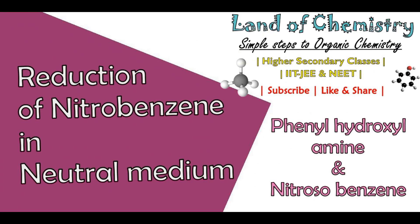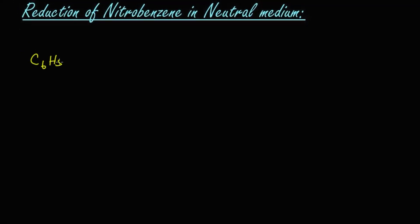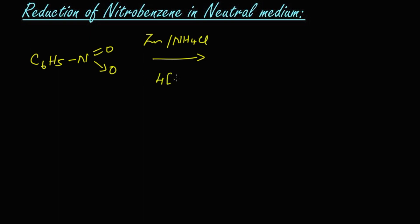Hi, welcome to Land of Chemistry — simple steps to organic chemistry. In this video we are going to learn the reduction of nitrobenzene in neutral medium. The reaction is: C6H5-N=O, which is nitrobenzene, reacts with zinc and ammonium chloride (NH4Cl). Four hydrogen atoms take part in this reaction.